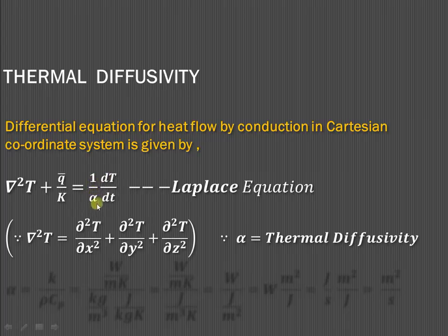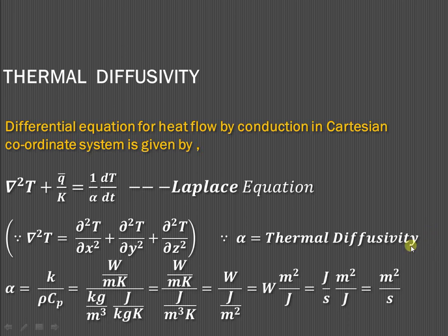The term alpha is important for us. Thermal diffusivity is defined as the ratio of thermal conductivity to rho times Cp. Thermal conductivity has units of watt per meter Kelvin, density is kg per meter cube, and specific heat is joule per kg Kelvin. The kg units cancel, giving watt per meter Kelvin divided by joule per meter cube Kelvin. The denominator — joule per meter cube Kelvin — is the energy stored per unit volume per unit change in temperature.